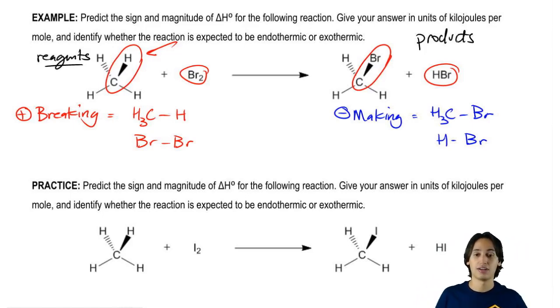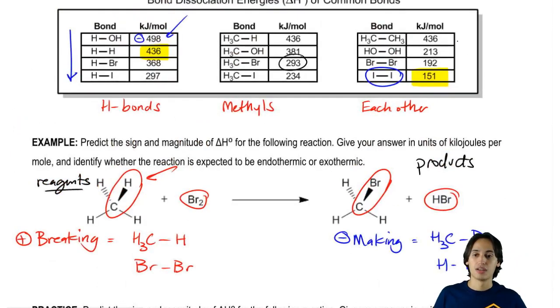So let's go ahead and look up the values that I'm bringing down. The C-H is going to be 436, so it's going to be positive 436. Br-Br is going to be right here. That's going to be 192, positive 192.